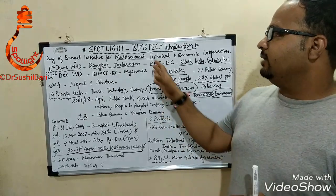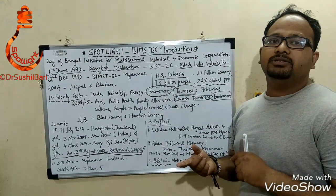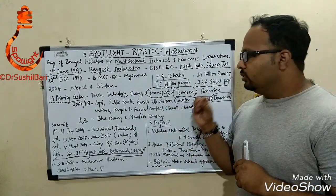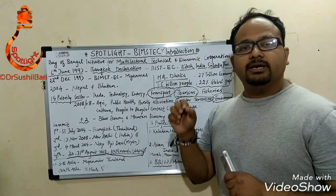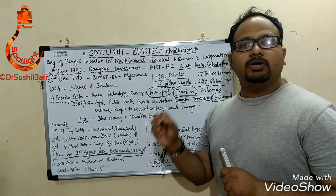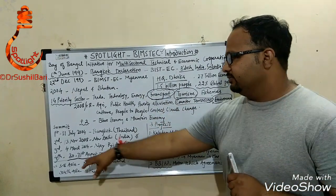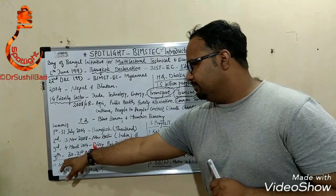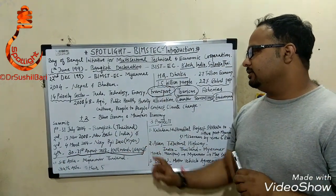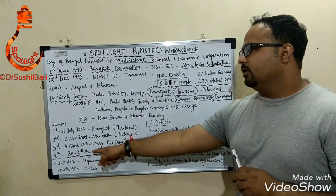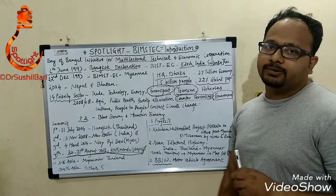So we have seen the introduction of BIMSTEC. In the next lecture, we will cover all 18 points of the Kathmandu Declaration, related to the fourth summit of BIMSTEC, which was held in Kathmandu, Nepal on 30th to 31st August 2018.